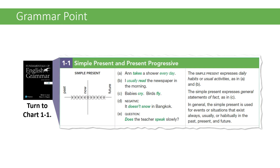This covers the first table in Fundamentals of English Grammar — a comparison of the simple present and the present progressive. The simple present expresses daily habits or usual activities, and it's also used to express general statements of fact. In general, the simple present is used for events or situations that exist always, usually — meaning most of the time — or habitually, meaning reoccurring in the past, present, and future. It covers something that was true in the past, is true now, and will be true in the future, or is repetitively true.